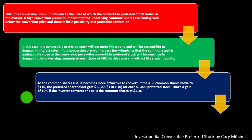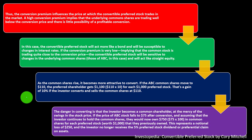As the common shares rise, it becomes more attractive to convert. If ABC common shares move to $110, the preferred shareholder gets $1,100 (110 × 10) for each $1,000 preferred stock — a gain of 10%. If the investor converts and sells the common shares at $110, that's profitable. However, the danger in converting is that once you convert, you now hold common stocks subject to full volatility. If you don't sell right after converting and the price falls, you're exposed to that decrease.